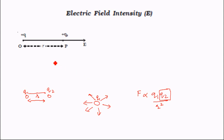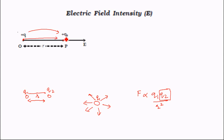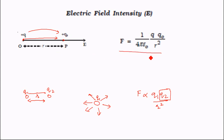If we go to the textbook, we can see that if we have two particles at distance R from each other, then this particle will have an influence on this particle in the direction of the electric field. That force will be defined by this equation, and the electric field will be defined by force divided by the charge of the particle being affected.